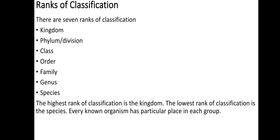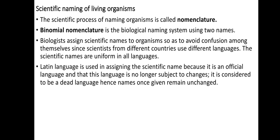From Kingdom down to Species, in the Kingdom there are major broad features, but as you go further down to Species, the organisms grouped together are more closely related to each other. This means that their characteristics and similarities are more the same. So let's now see the scientific naming of living organisms.